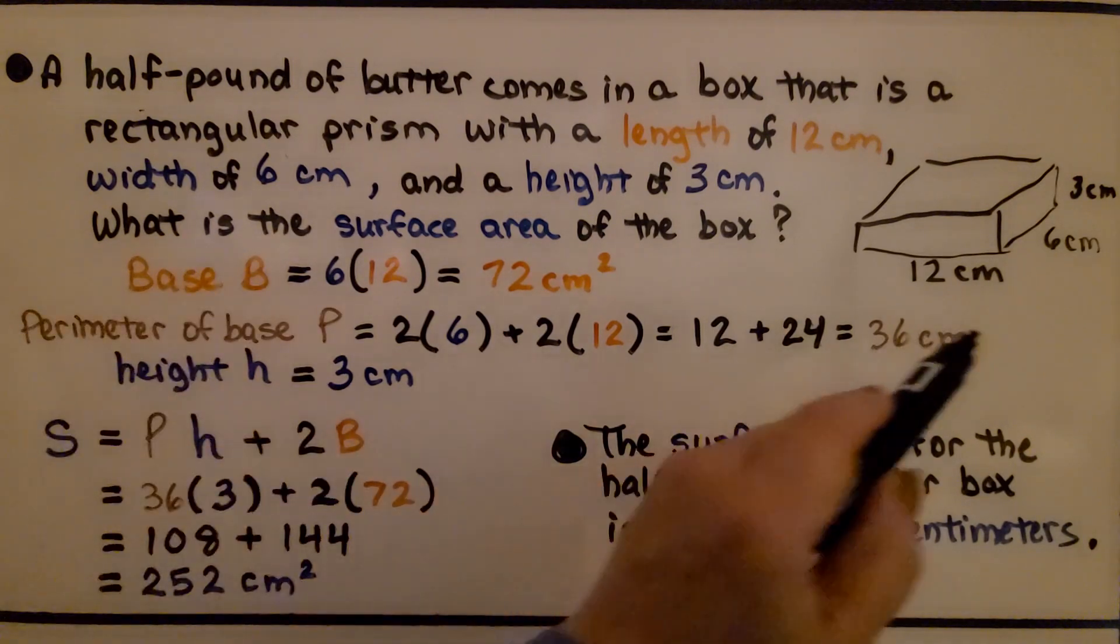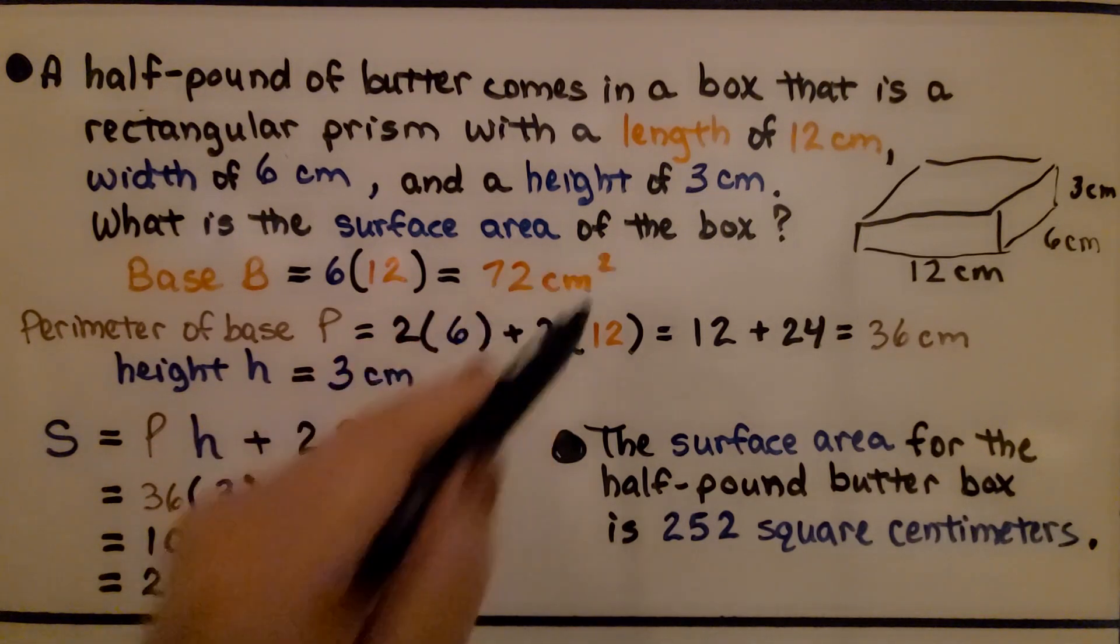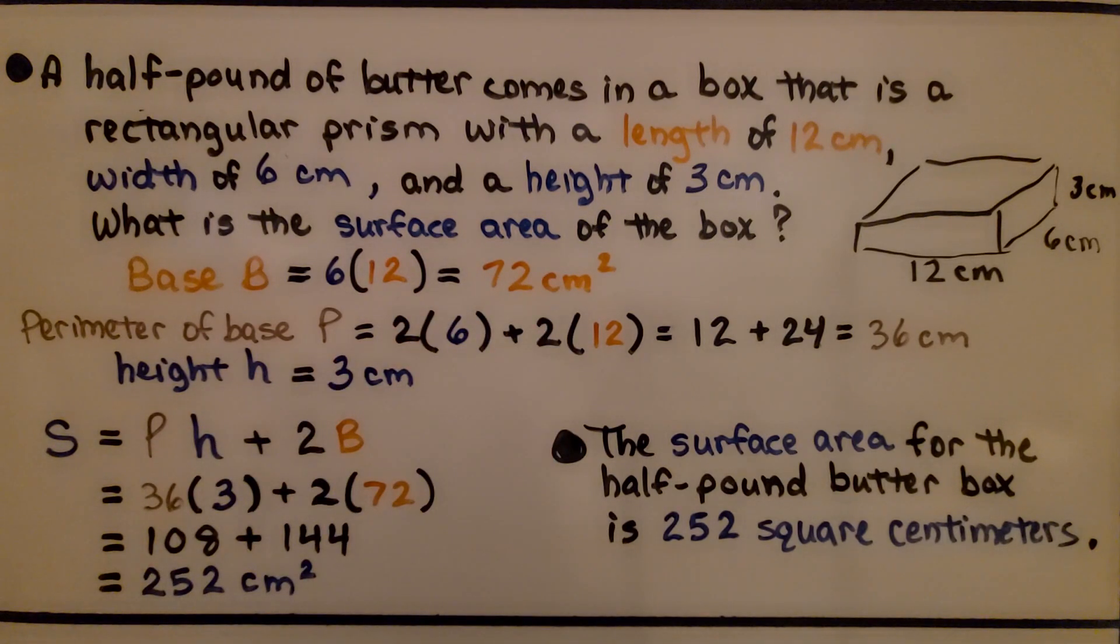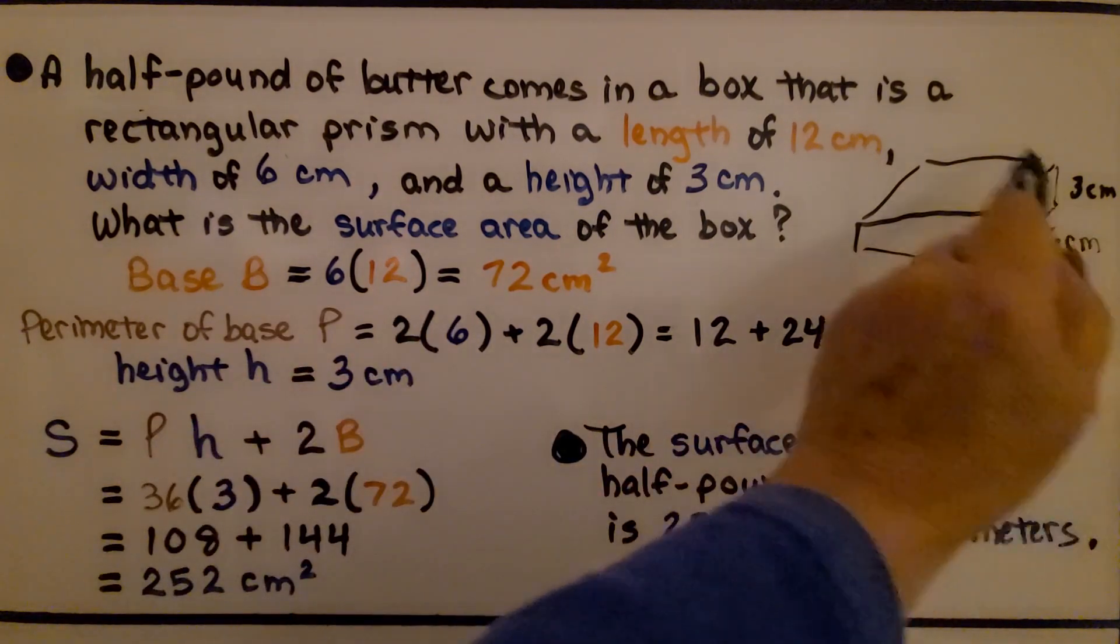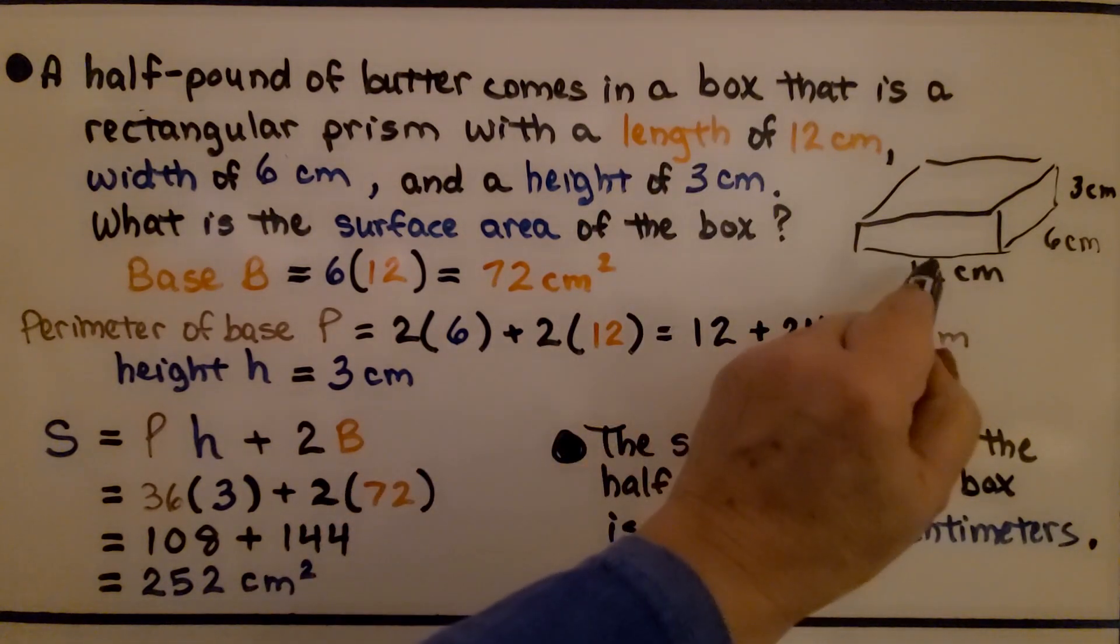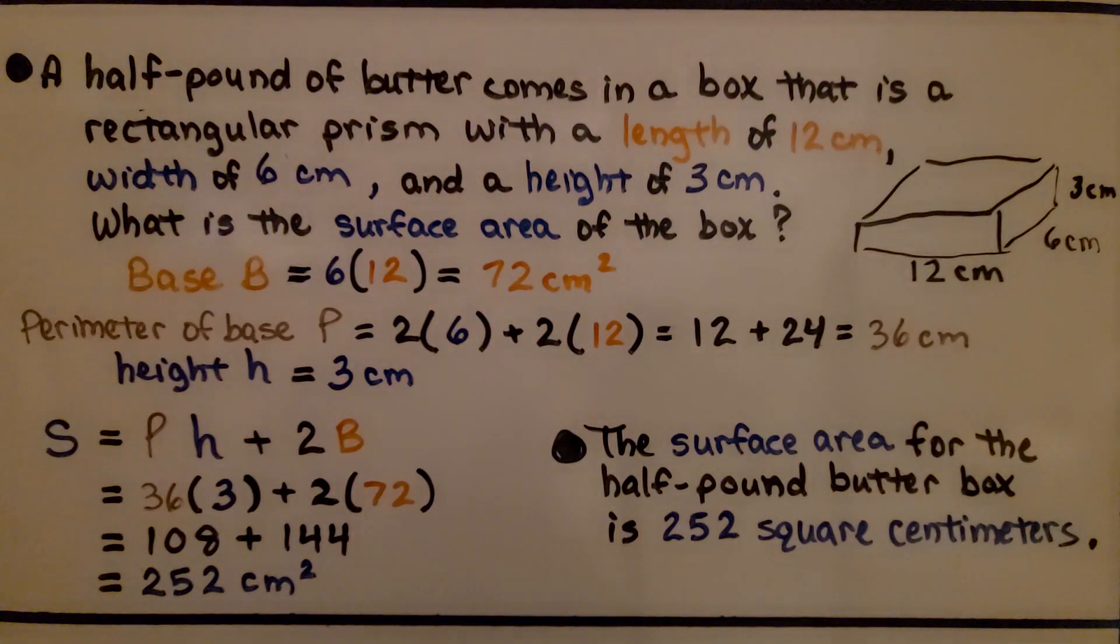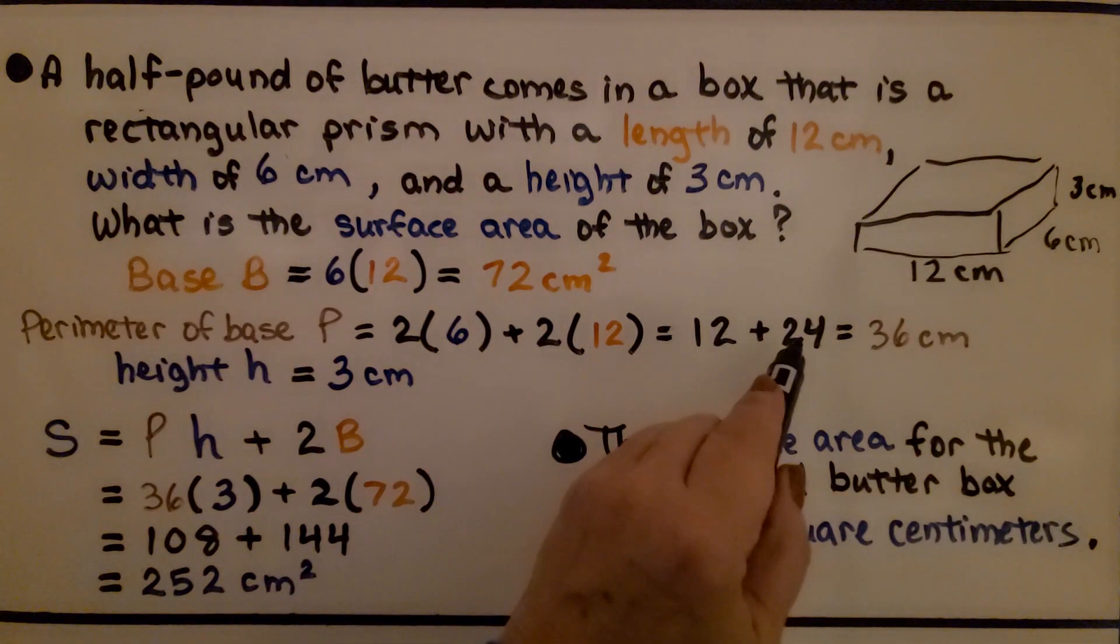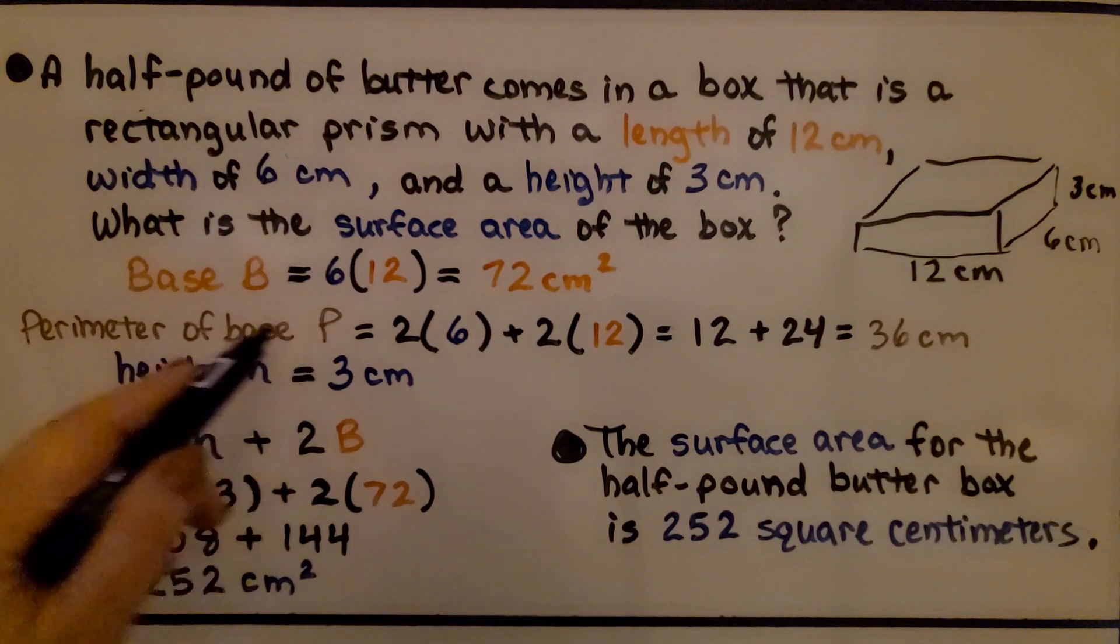For our base B, we need to do 6 times 12, which is 72 centimeters squared for the area of that base. The perimeter of the base would be 2 times 6, this 6 and the 6 on this side, and 2 times 12, the 12 in the front and the 12 in the back. We do 12 plus 24 and get 36 centimeters for the perimeter of the base.